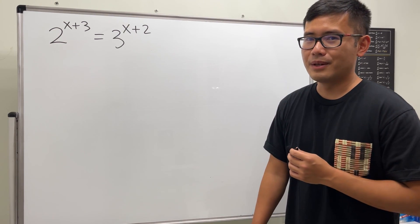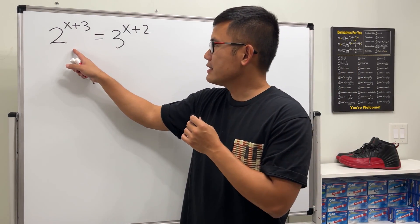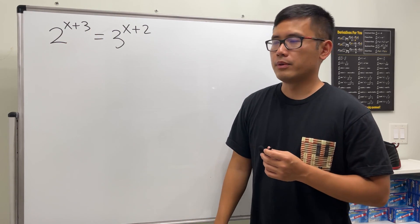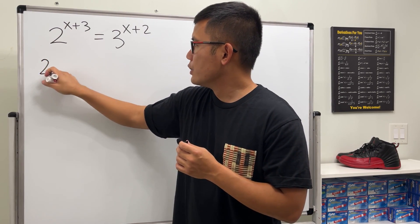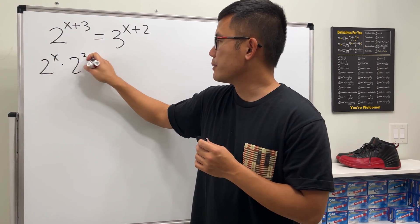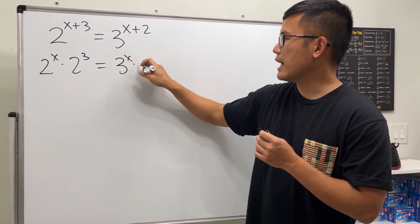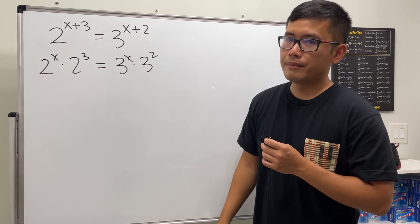Alright, this is how I do it. On the left hand side notice that we have x plus 3 in the power so we can use the rule of exponent to break this apart. So we will see this is 2 to the x times 2 to the third power and we'll do the same thing on the right hand side: 3 to the x times 3 to the second.